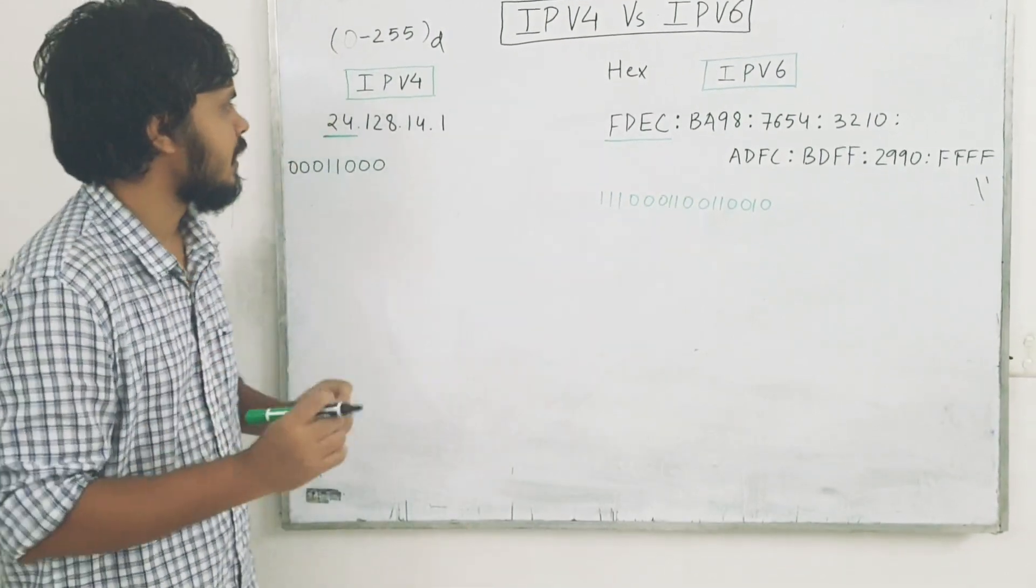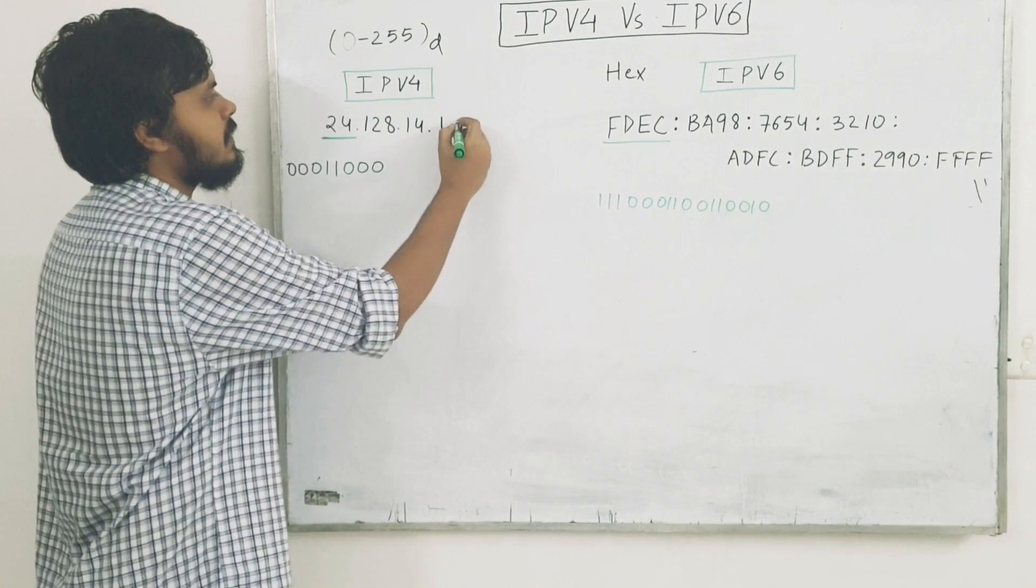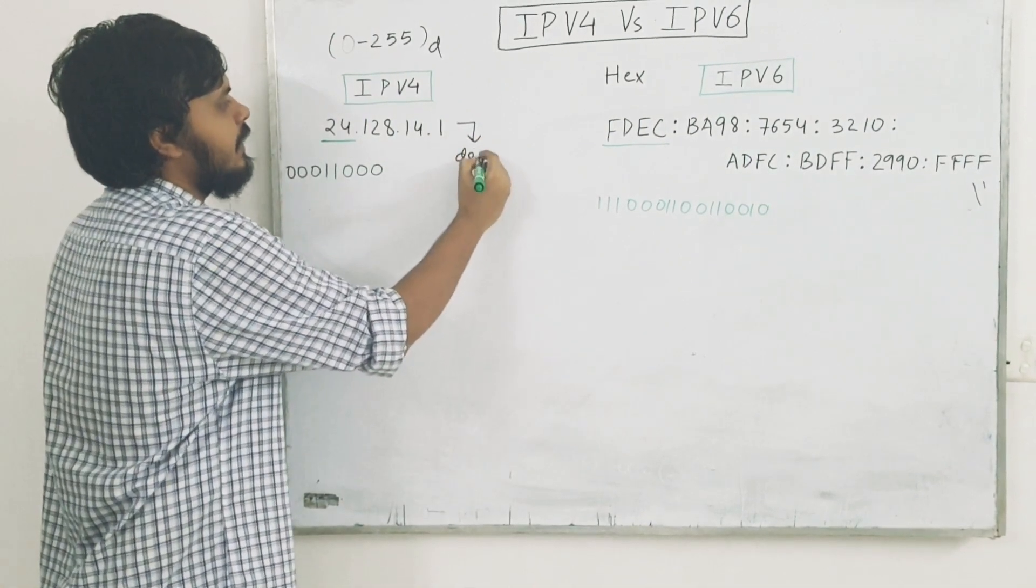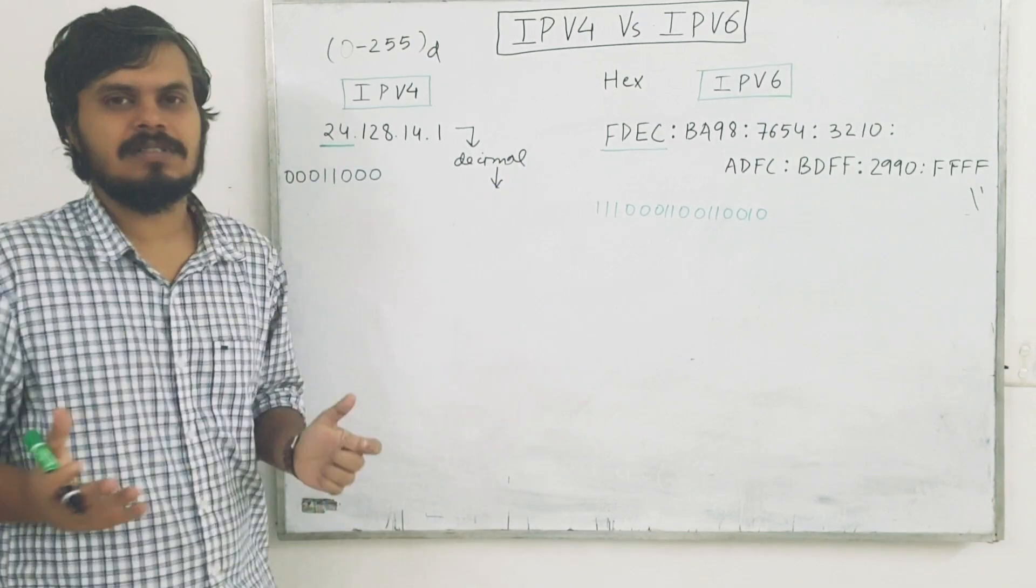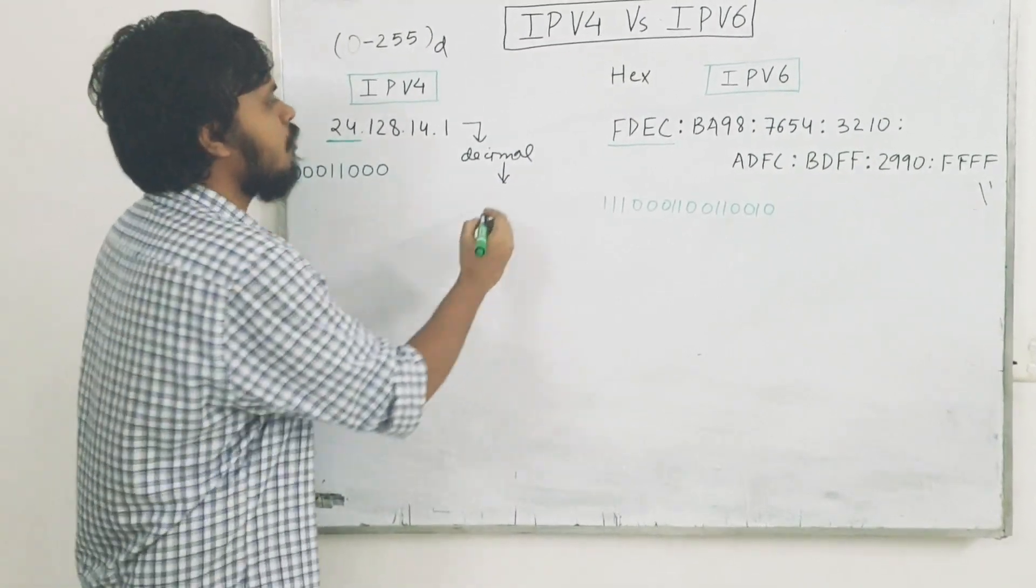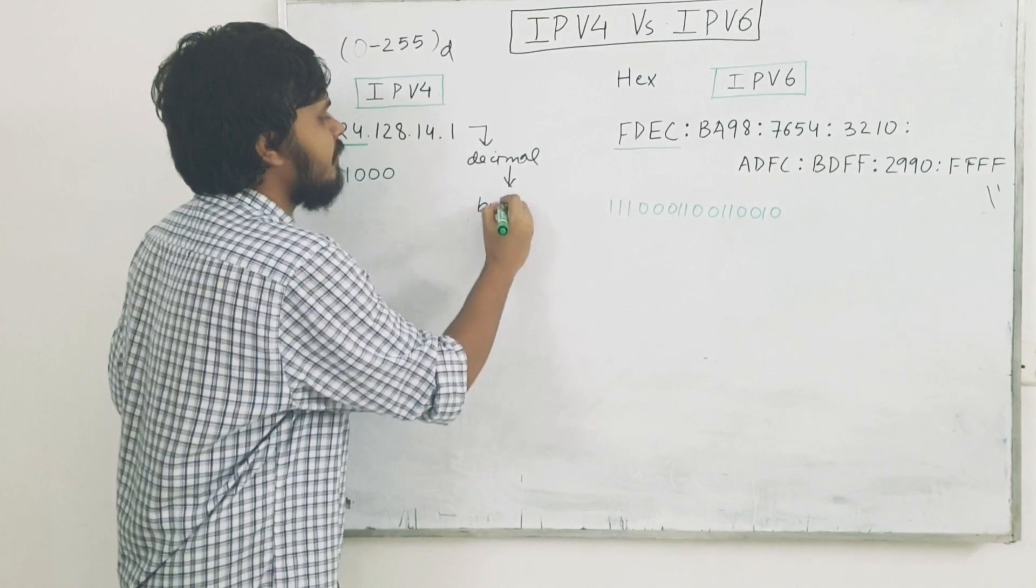So apparently this is a decimal value, right? This is in decimal. So the problem is, that this decimal is not your computer, not any computer. So what you need to do is, you have to do a decimal to binary conversion.